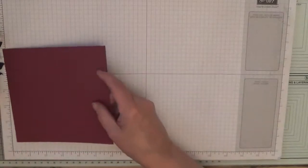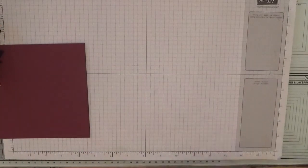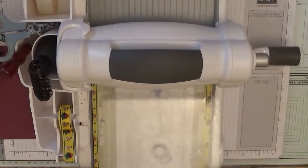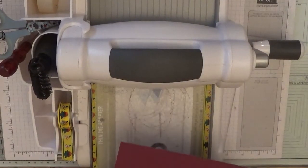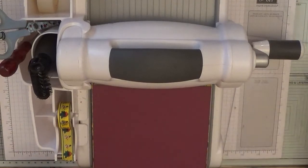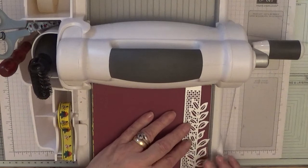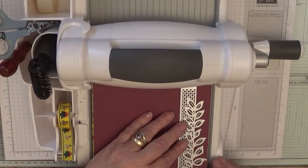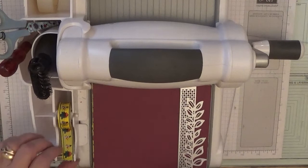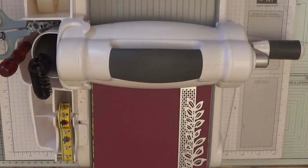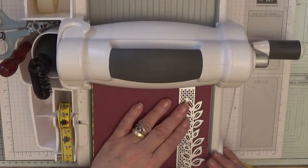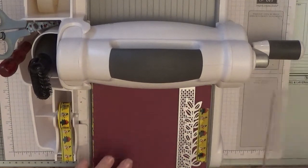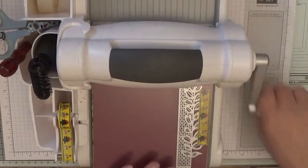We need this bit and a Big Shot and a die. With this die, you're going to put it right to the edge evenly. I've got no tape ready, so let's get a bit of tape and tape that on there. Put that in and run it through.